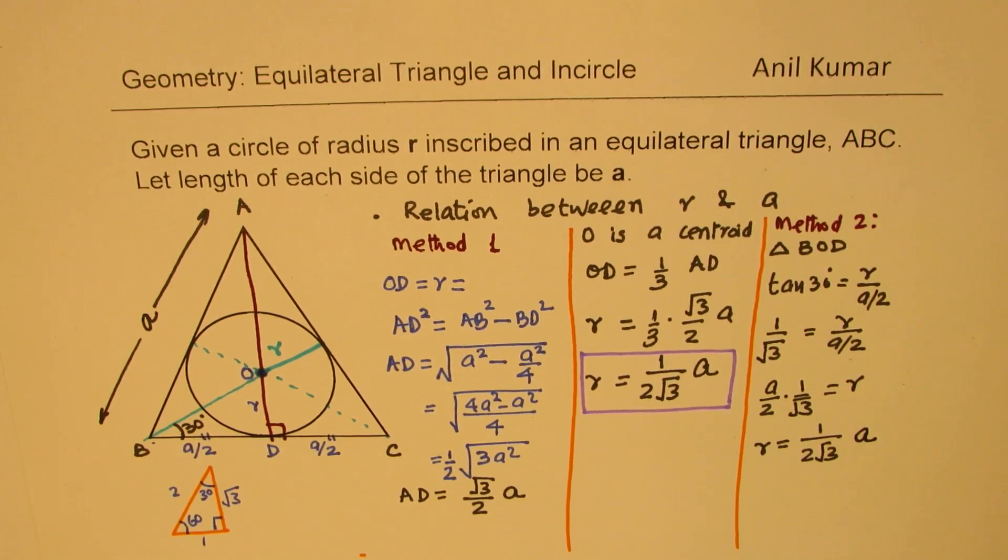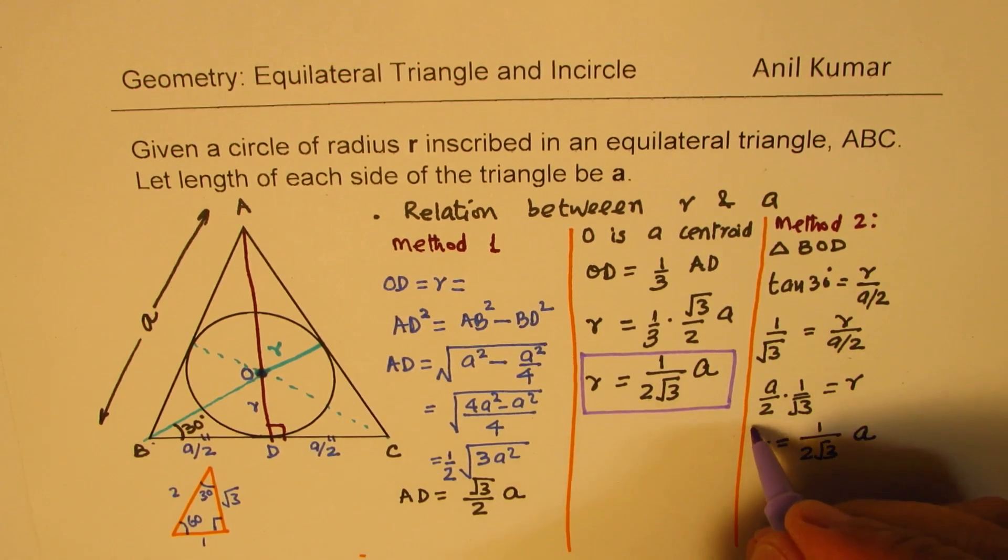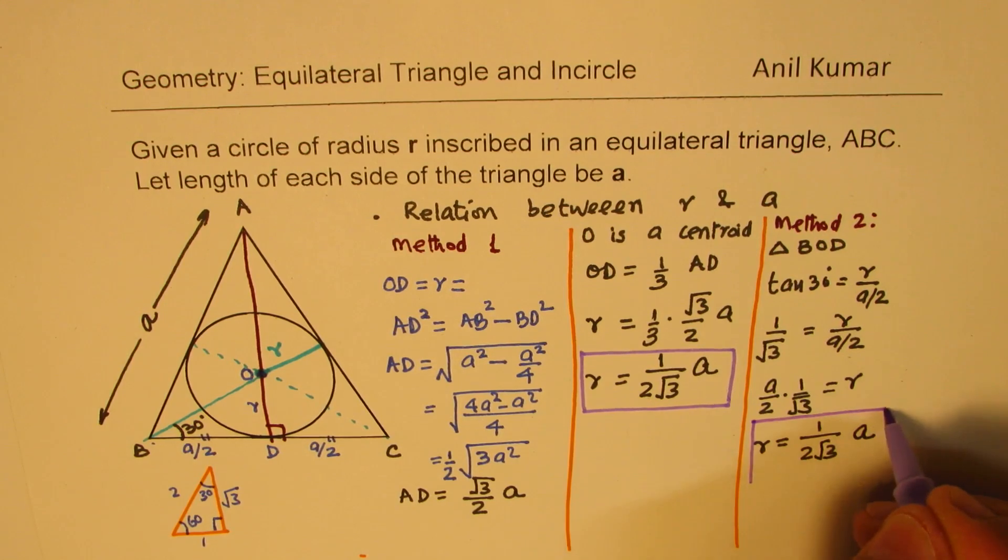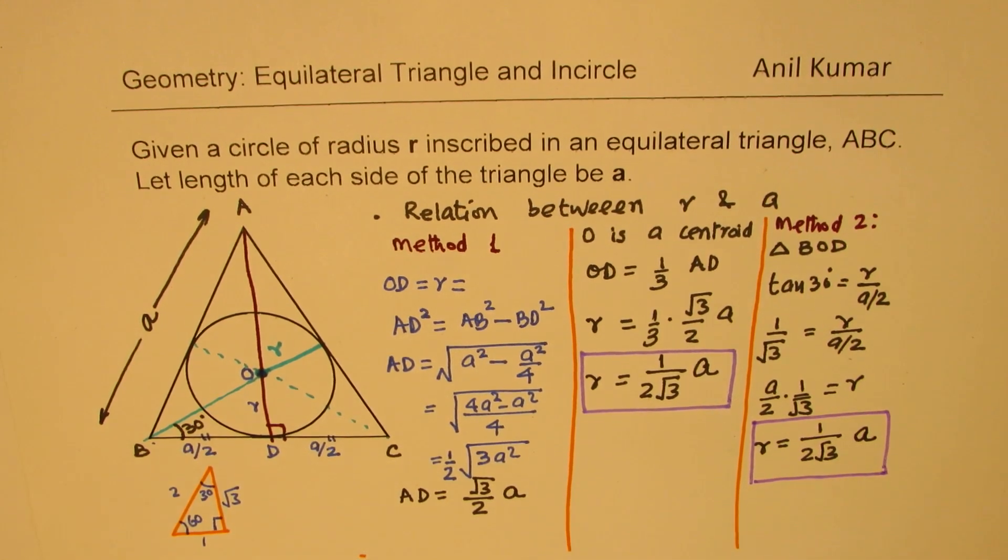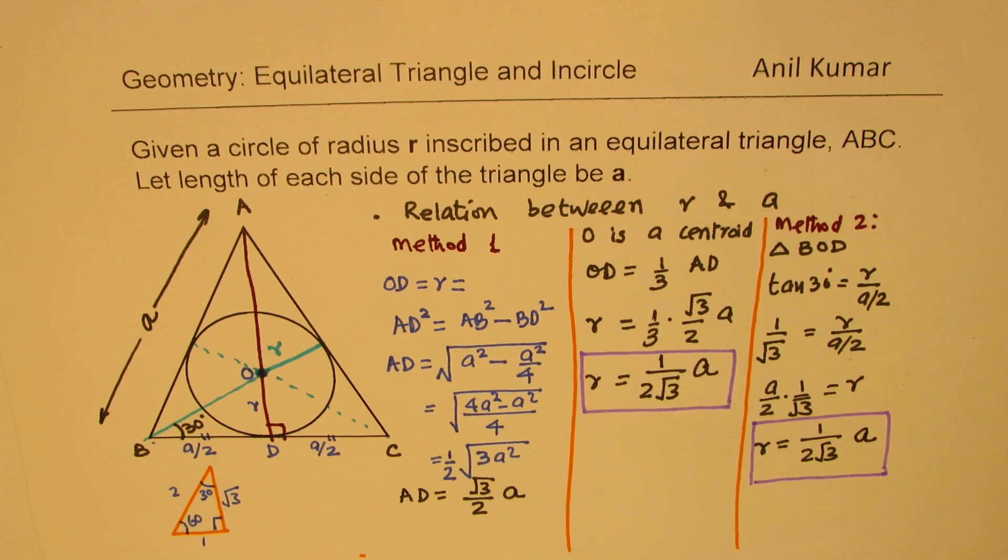So we got this method using trigonometry. We got this formula. So if you remember this formula, you can solve many questions which relate the inscribed circle's radius with perimeter or area of the given triangle. So I hope that helps.